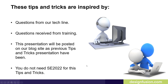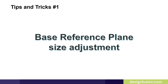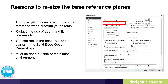For those of you on older versions, you do not need Solid Edge 2022 for these tips and tricks. The first tip is the base reference plane size adjustment. There are a lot of benefits to resizing your base reference planes — they can provide a scale of reference for creating your sketch and reduce the use of zoom and fit commands. You can resize them from Solid Edge Options on the General tab, where the default in metric is 120. This must be done outside of the sketch environment.